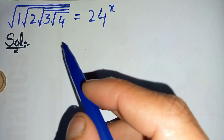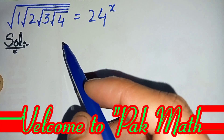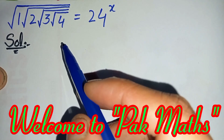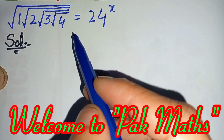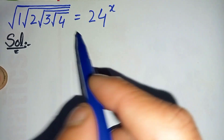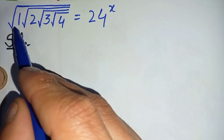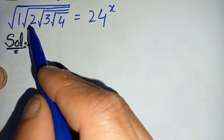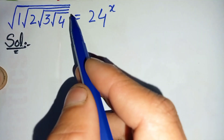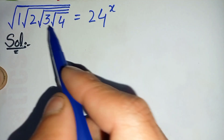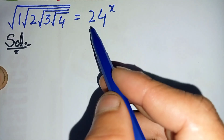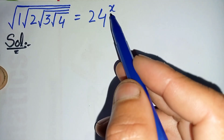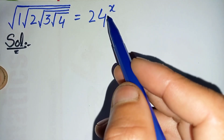Hi everyone, welcome to Parkmas. How to solve this nice square root math problem: square root of 1 times square root of 2 times square root of 3 times square root of 4 is equal to 24 raised to power x.